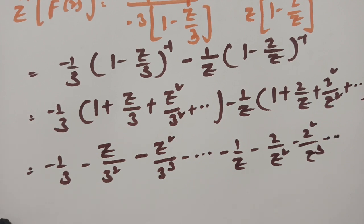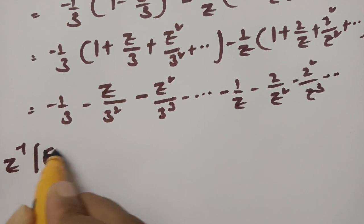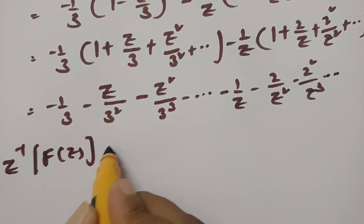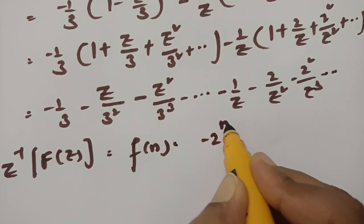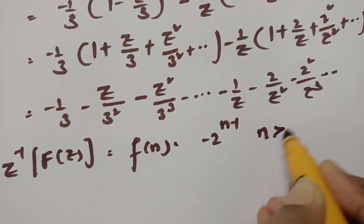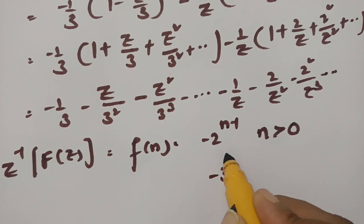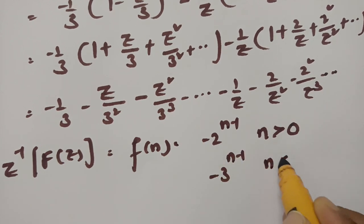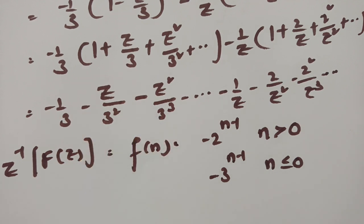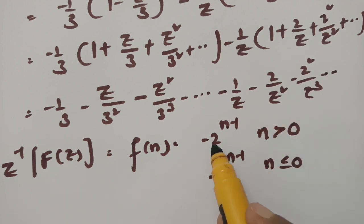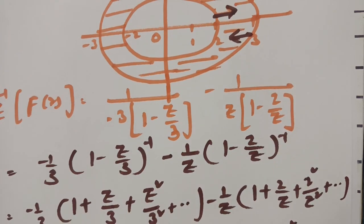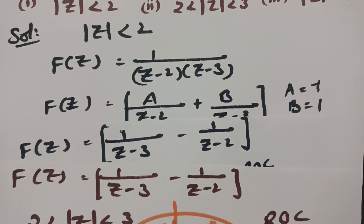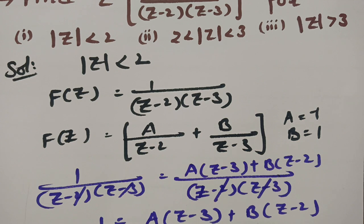Therefore, Z-inverse of F(Z) gives f(n) = -2^(n-1) for n positive (n ≥ 1), and f(n) = -3^(n-1) for n less than 0. So for negative values it is -3^(n-1) and for positive values it is -2^(n-1). This is the answer for the second case.